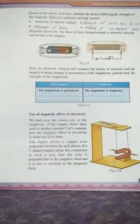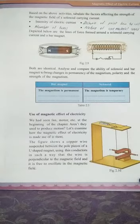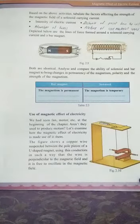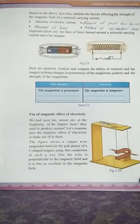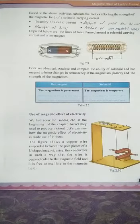The electric motor works on the basis of the force acting on a current-carrying conductor when placed within a magnetic field. The principle behind the electric motor is: a current-carrying conductor placed in a magnetic field experiences a force. Now let us see the parts of the electric motor first, then we will discuss the working.